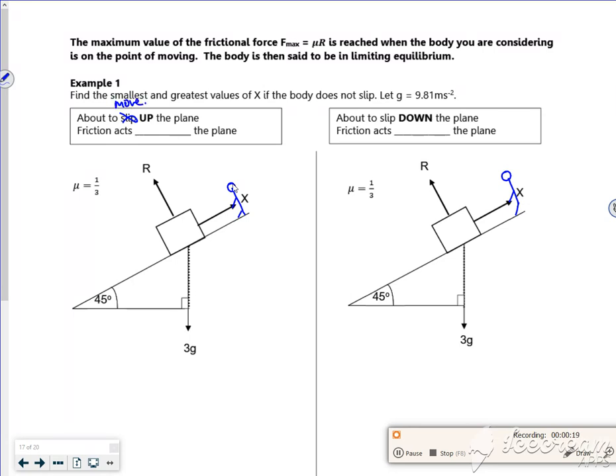So I'm going to pull it hard enough so the force X is bigger than F max. That's kind of what it's saying. But here, if I'm going to pull it up to move it, the X has to be bigger than F max to move it up. I'm just putting up 3g cos 45 there, let's see.